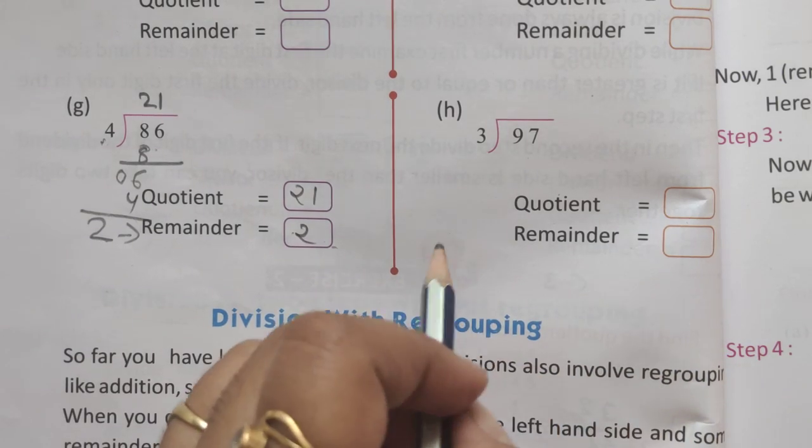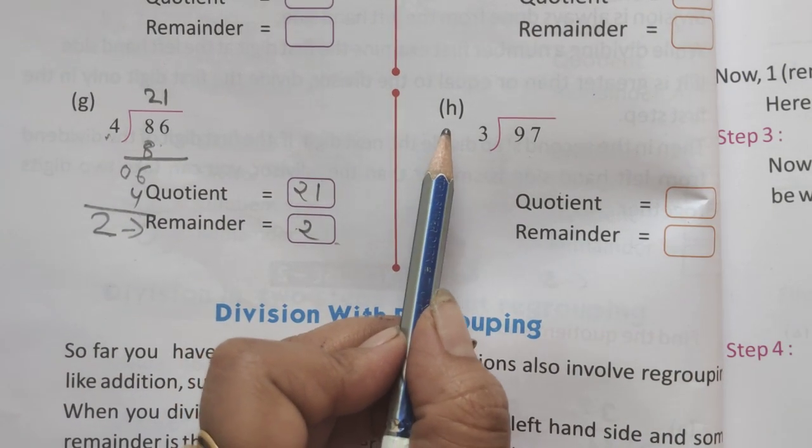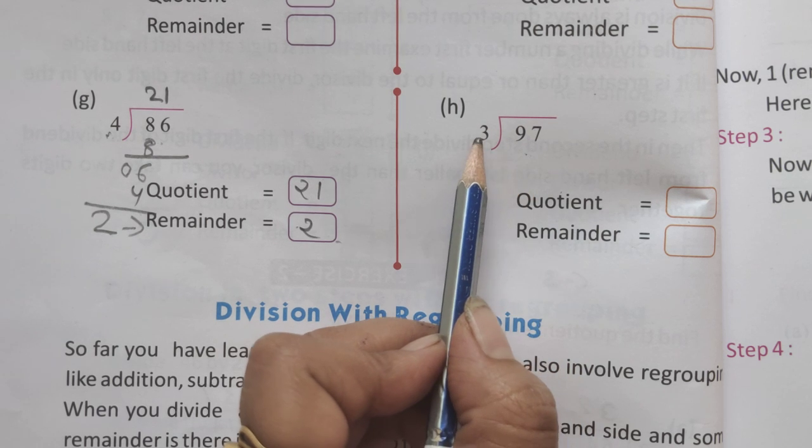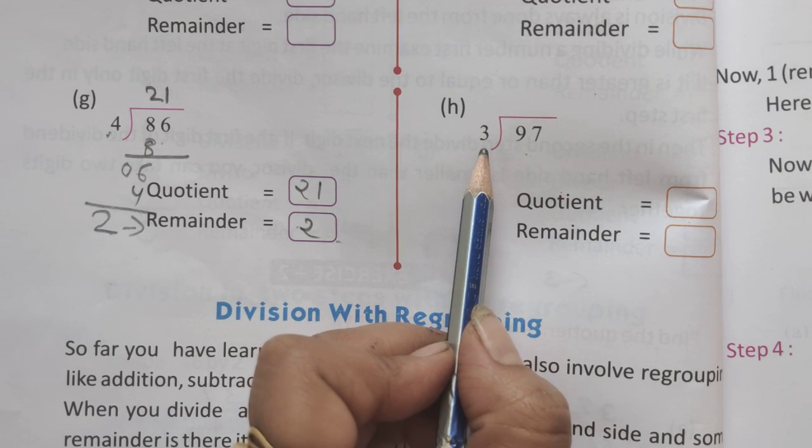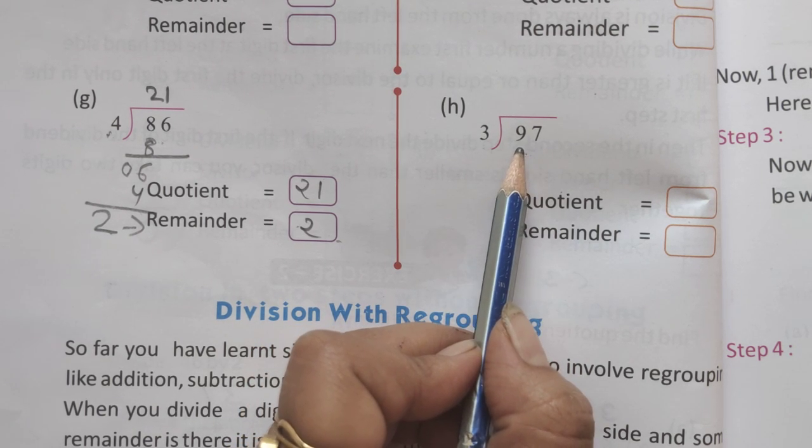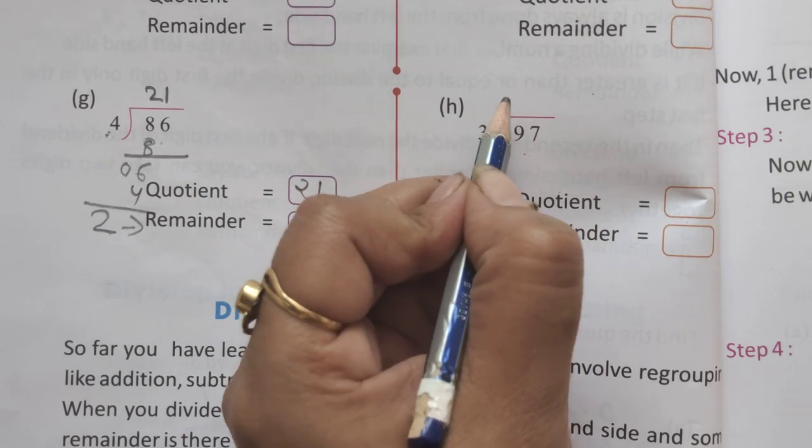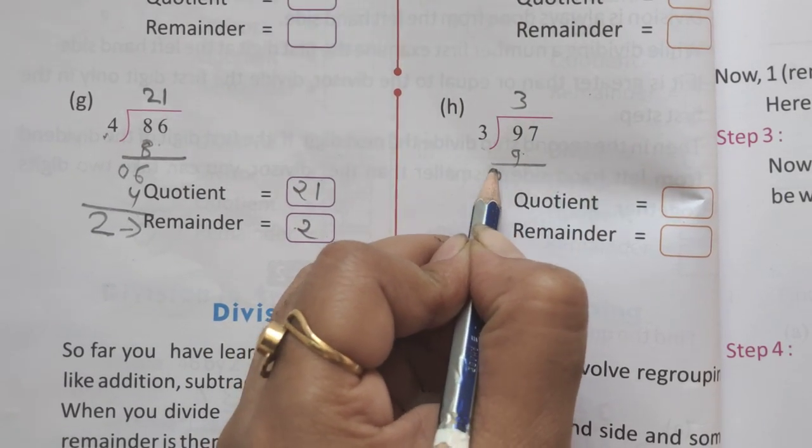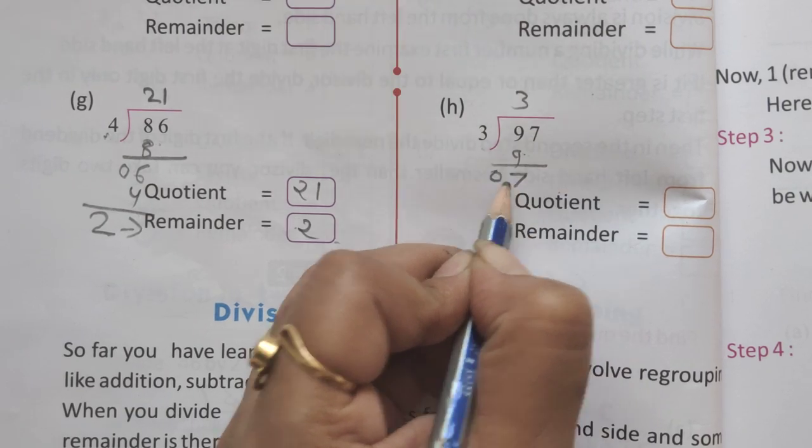Students, the last example is H. 97 is the dividend and 3 is the divisor. Using the table of 3: 3 threes are 9. 9 subtract 9 equals 0. Next number is 7.